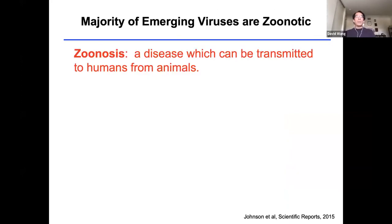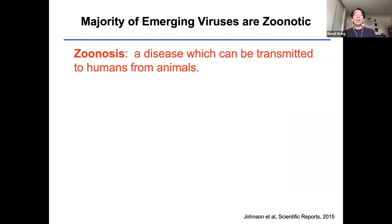Another key term: the majority of emerging viruses are referred to as zoonotic. Zoonosis is defined as a disease that can be transmitted to humans from animals. If you think about viruses that have emerged — HIV was transmitted from non-human primates to humans; influenzas are typically transmitted from avian species or swine to humans. These classic pathogens all follow this model of zoonotic disease.